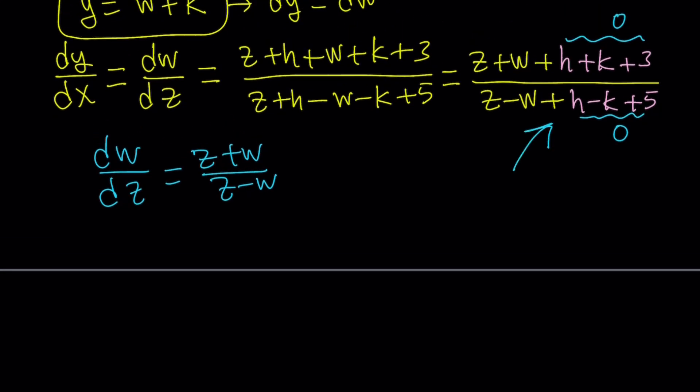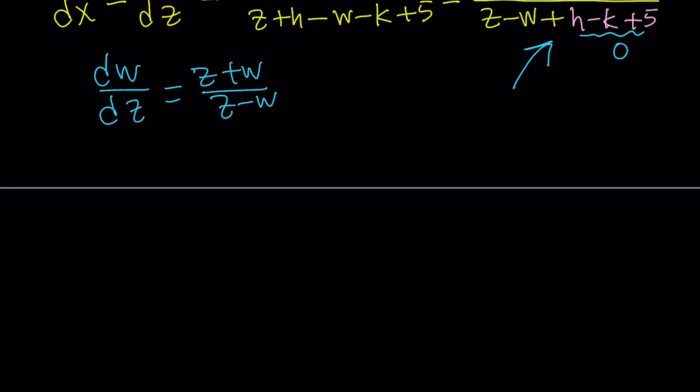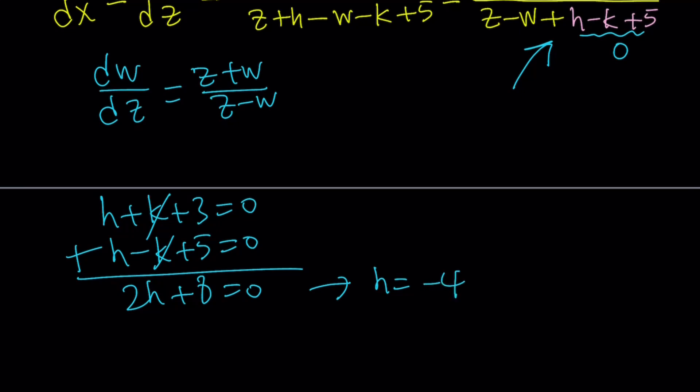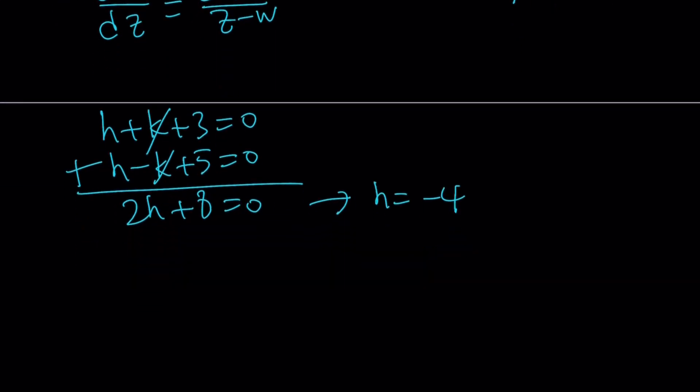But let's go ahead and find the h and k values first. From here, we get two equations. That gives us a system. So, h plus k plus 3 equals 0 and h minus k plus 5 equals 0. You can go ahead and add these up. k cancels out. 2h plus 8 equals 0. This means h is equal to negative 4. And if you plug in h into one of these equations, you get k equals 1.